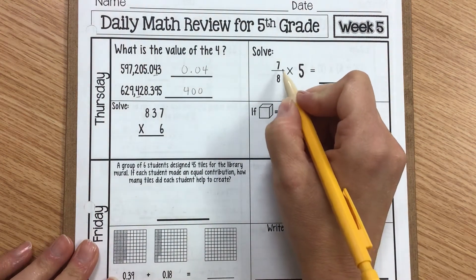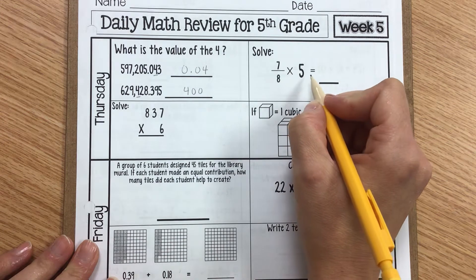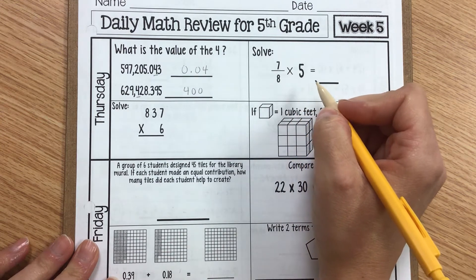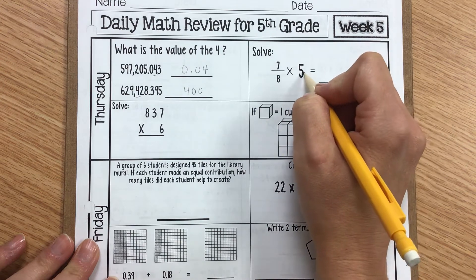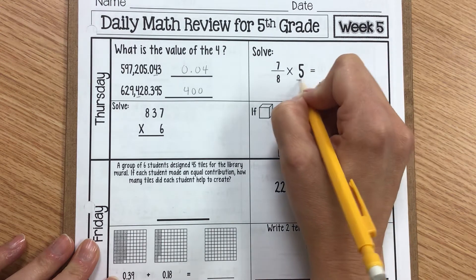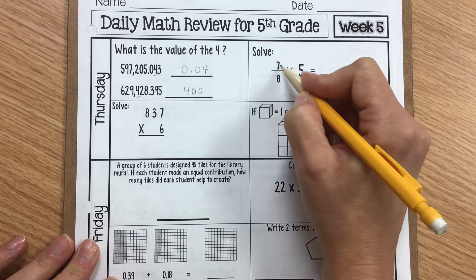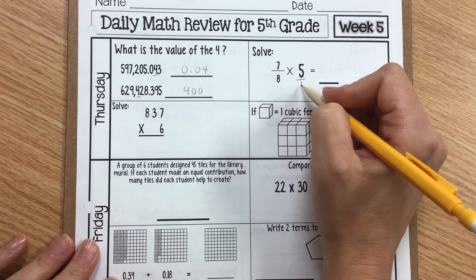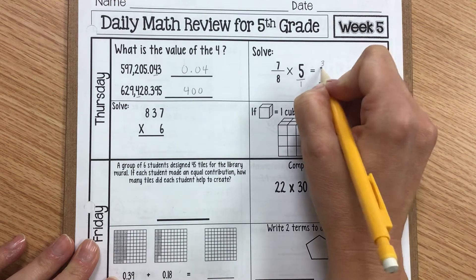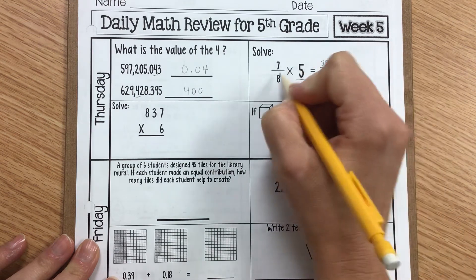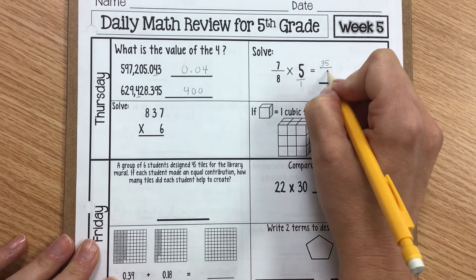Let's come across over here. We have 7/8 times 5. I know we haven't really learned that yet in 5th grade, but this just gives you a little sneak peek. So to turn a whole number into a fraction, you can just stick it over 1. So we have 7/8 times 5/1. 7 times 5 gives you 35. 8 times 1 is 8.